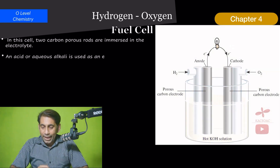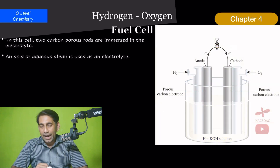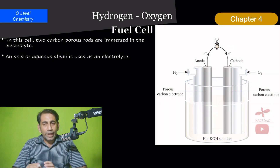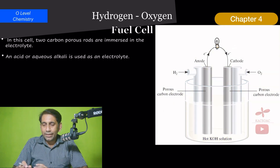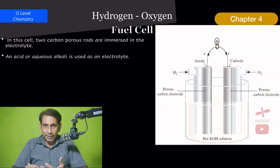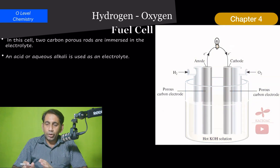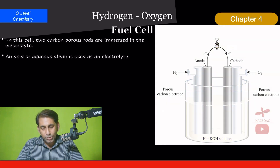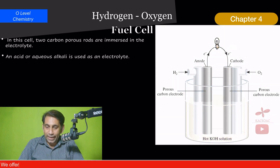An acid or alkali is added into the container to behave as the electrolyte. Both acidic and alkaline substances can be used as the electrolyte in this cell.